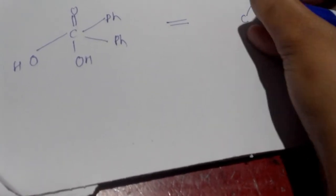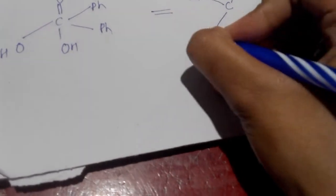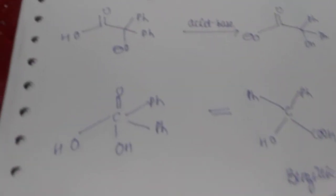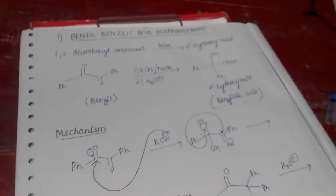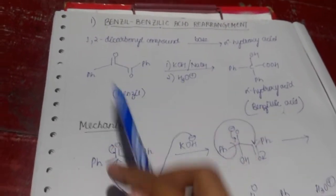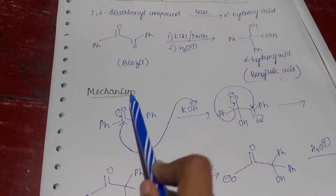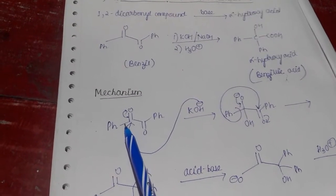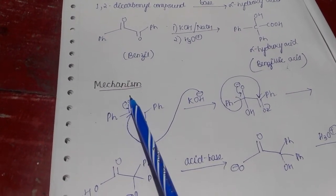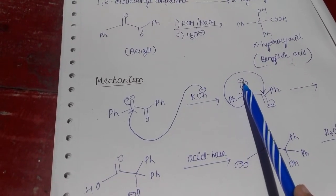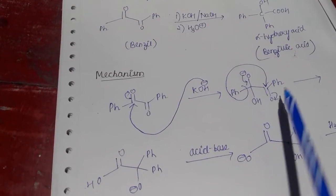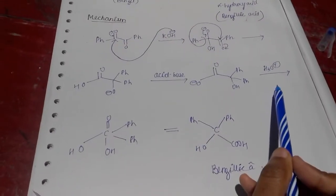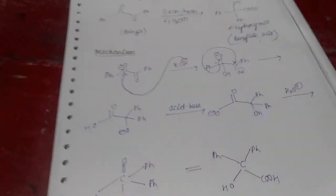So the mechanism was quite simple I think. Sorry for the bad quality of the video guys. So you see what happens is in the mechanism, first we take this 1,2-dicarbonyl compound, the base comes and attacks the positive center, then the bond breaks. After that this negative charge comes back again and this group migrates to this position, same thing happens again. After that acid-base reaction takes place, then we give water in the second step and it gets converted to benzilic acid. So this was very simple.